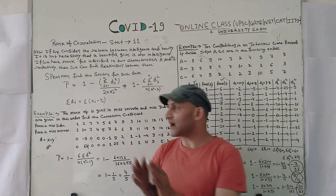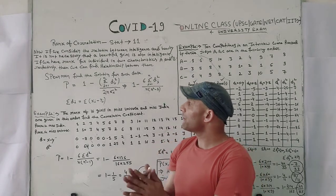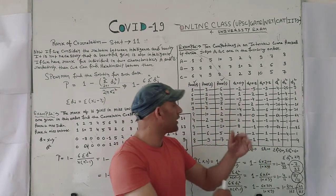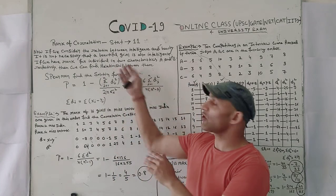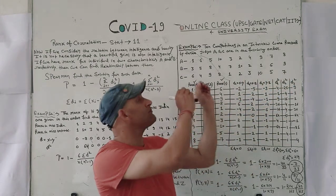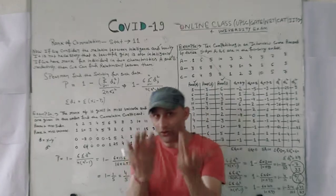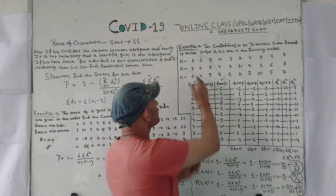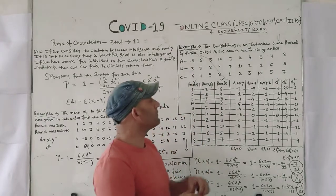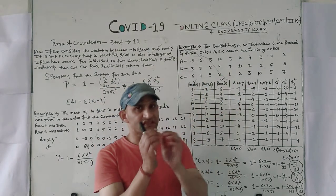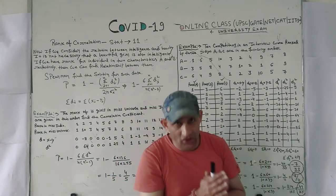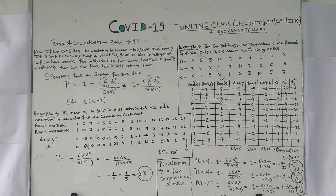I think you understand. We are providing our best for your success. Thank you so much. After this, we will also explain part number two of rank correlation. You must also watch it. If some judges have given the same rank — for example, if many judges give the same value — in this condition, what will you do? We will discuss this in the next lecture. Thank you so much.